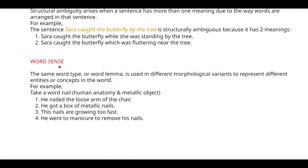Next, what is word sense? Word sense is using the same word in different concepts — the word is the same but you are using it in different contexts, leading to different meanings. The same word type or word lemma is used in different morphological variants to represent different entities or concepts in the world.